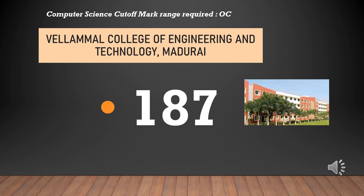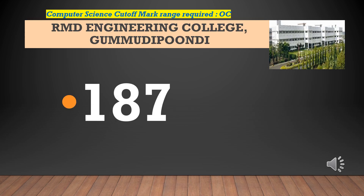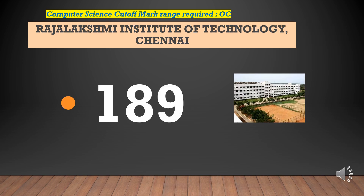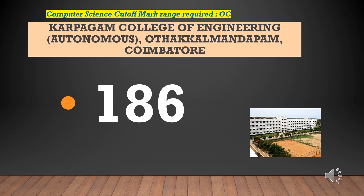Vaalmal College of Engineering and Technology — cut-off required for CSEOC is 187. RMD Engineering College — cut-off required for CSEOC is 187. Rajalakshmi Institute of Technology — cut-off required for CSEOC is 189. Government College of Engineering Bargur — cut-off required for CSEOC is 187. Yearly tuition fees less than Rs. 10,000. Karpagam College of Engineering — cut-off required for CSEOC is 186.